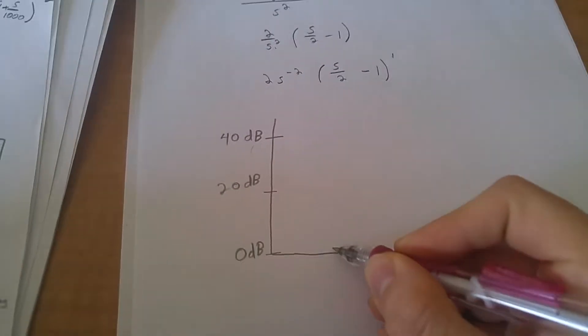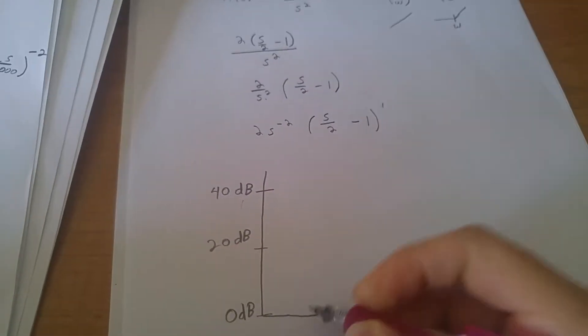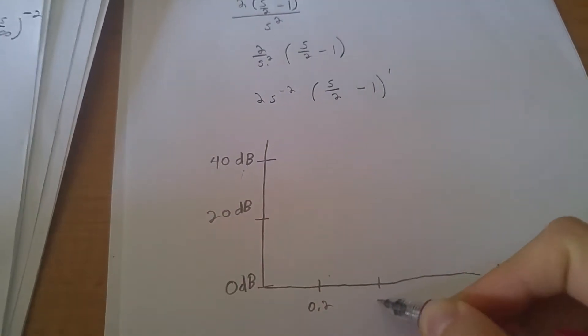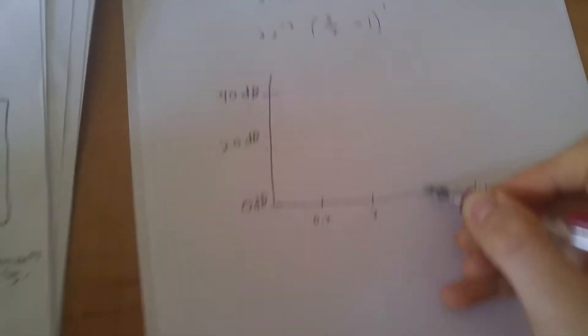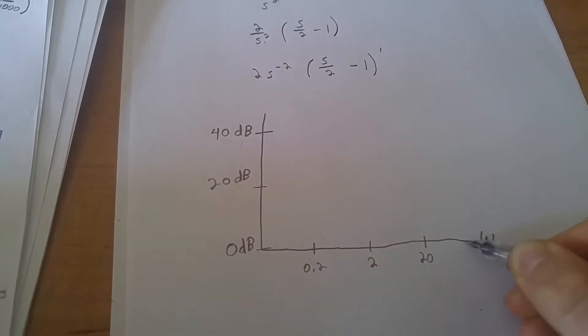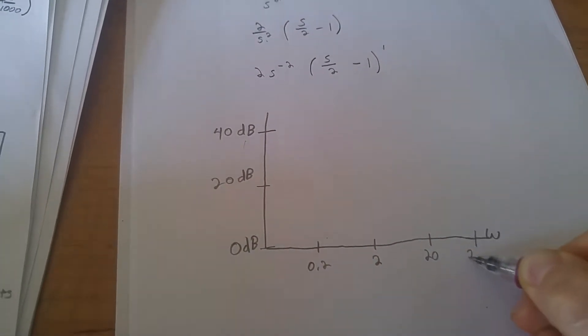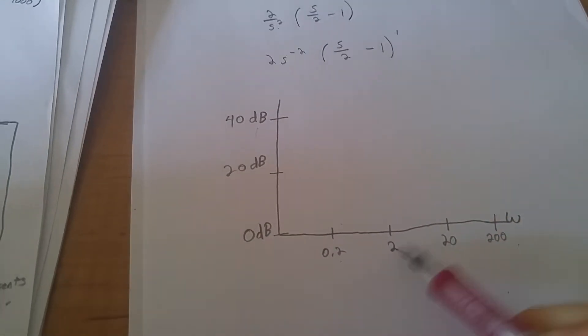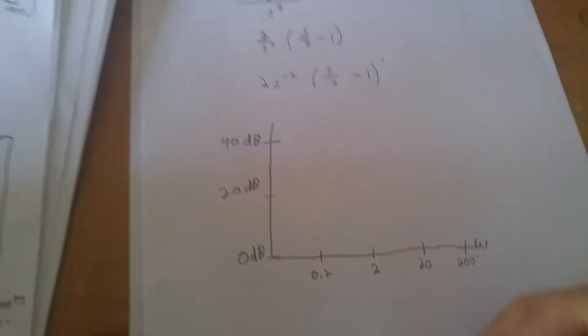So, I'm going to draw my axis here now, and I'm going to say this would be 0.2, and this is going to be 2. This is going to be 20, and this is going to be 200. This is also based on a log. As you can see, this multiplies by 10 each increment, so I can express it like that.